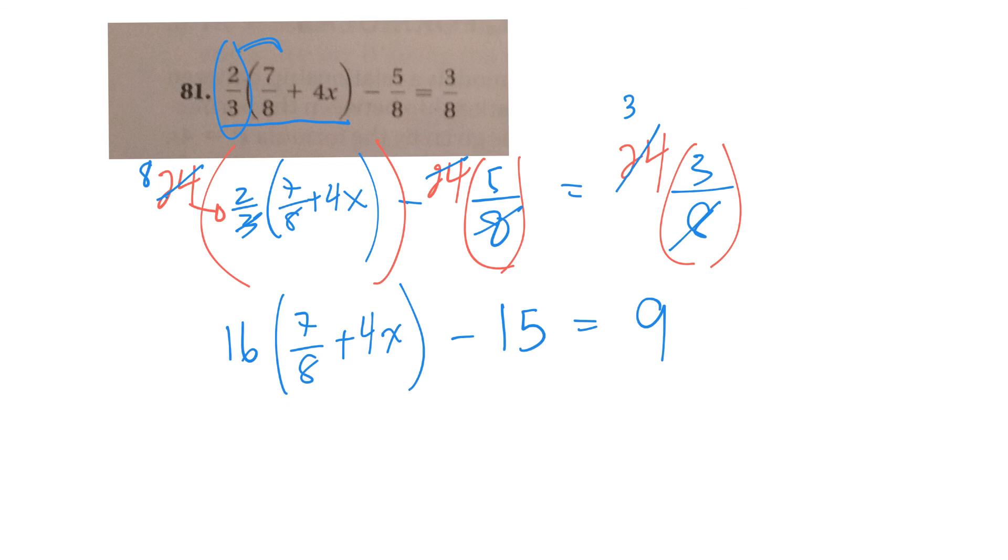So now I multiply this 16 through. So 16 times 7 eighths, that would be, I think, 14. Check that. 8 goes into 16 twice. 2 times 7 is 14. Plus 16 times 4 would be about 64x. Minus 15 is equal to 9. 14 take away 15 is a negative 1. So it would be 64x minus 1 is equal to 9.